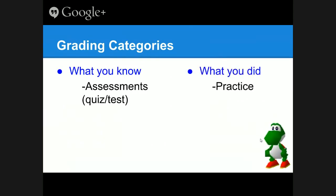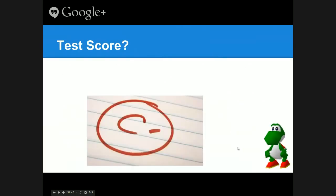The second grading category is what you did: the practice, labs, and assignments you completed to figure out what you knew. In terms of weights, showing me what you know is a big part of the class, while the practice is a smaller aspect, so it's weighted less.